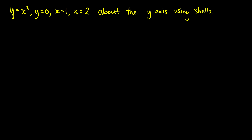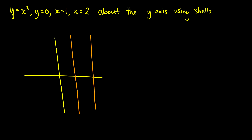Let's do an example: y = x³, y = 0, x = 1, x = 2, rotated about the y-axis. Drawing is the most important part. We're looking between x = 1 and x = 2, rotating about the y-axis, and we have x³. At x = 1, x³ = 1, and at x = 2, x³ = 8, so we graph the curve from the point (1,1) up to (2,8).